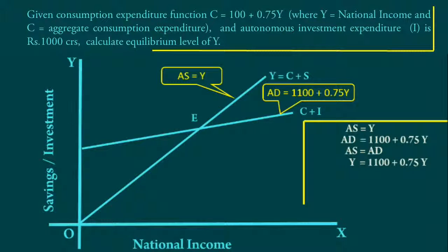Then Y = 1100 + 0.75Y. Take 0.75Y to the left-hand side: Y - 0.75Y = 1100. On simplifying we get 0.25Y = 1100.